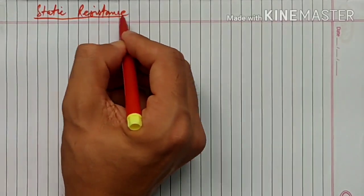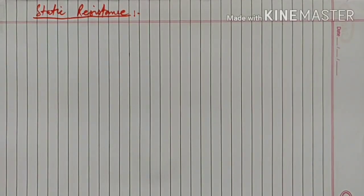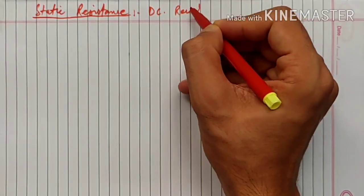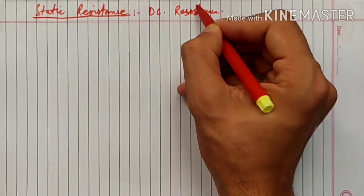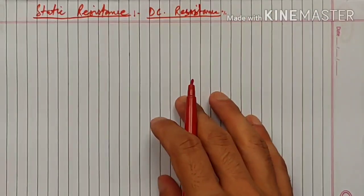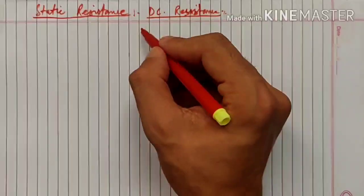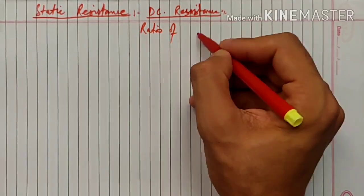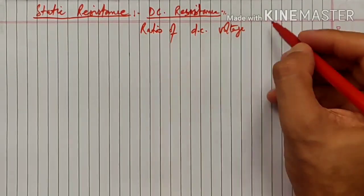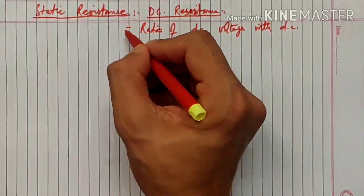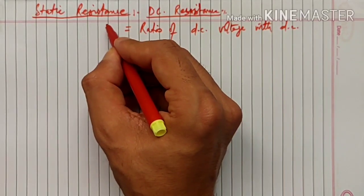Static resistance of a diode - as we know that resistance is the ratio of voltage with current. Static resistance का दूसरा नाम होता है DC resistance. DC resistance को हम define करते हैं as ratio of DC voltage with DC current. इसे हम Rs लिखते हैं।